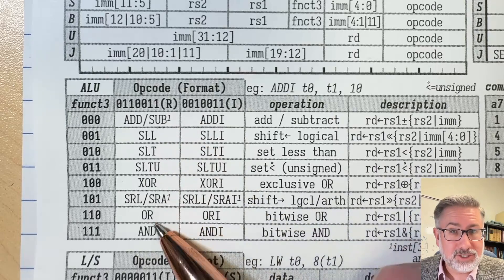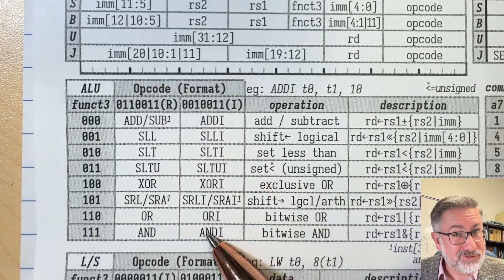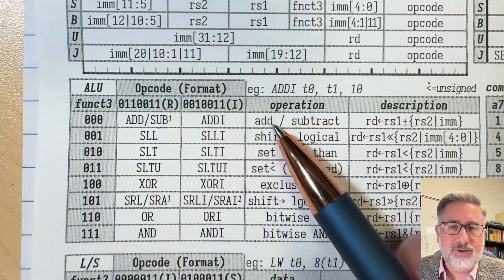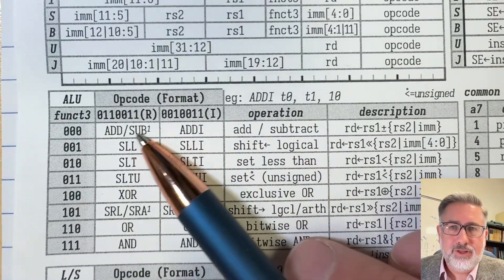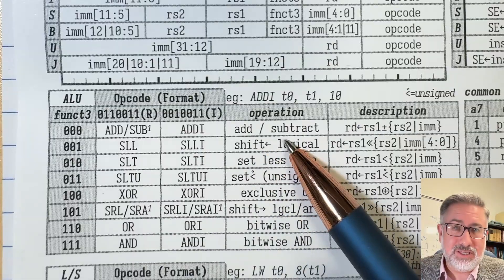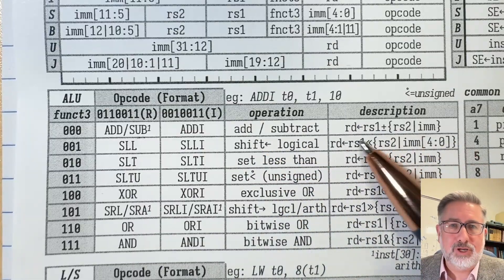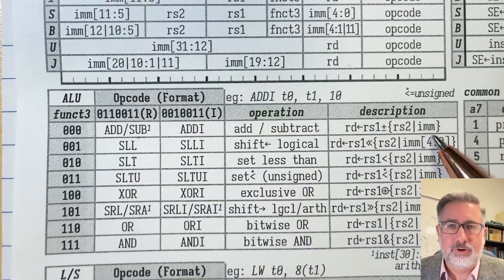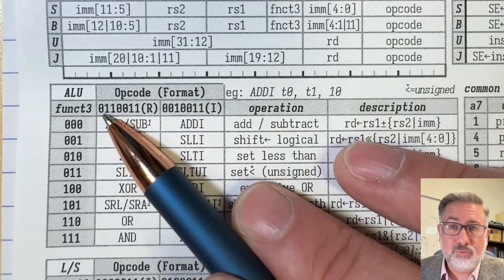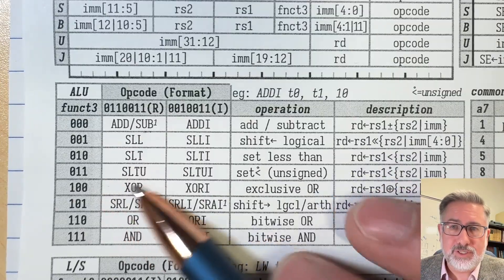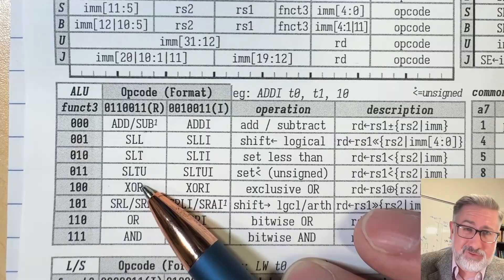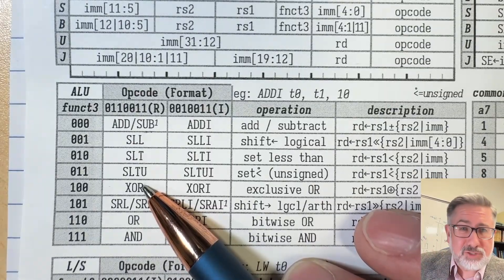There are register variants and immediate variants for each of these. We'll talk about immediates in a different video. But then what I've got on this table is the operation itself, what it actually means, and an example of what actually happens. So if we were going to do exclusive or, for example, our opcode would be this. Our function 3 would be this. That gives us an exclusive or. Our register values would be whatever they are. And then function 7 would just be ignored.